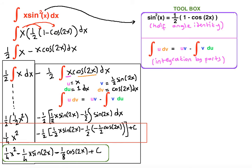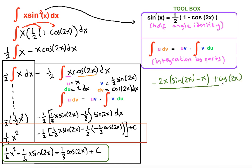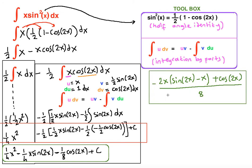If you'd like to condense this expression, you can combine it at the LCD of 8, giving you (negative 2x·sin(2x) minus x + cos(2x)) all over 8. You can either combine it or leave it as is — either form is a correct answer. Thank you for watching.